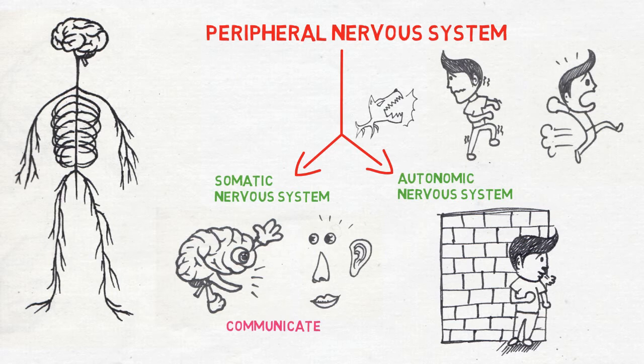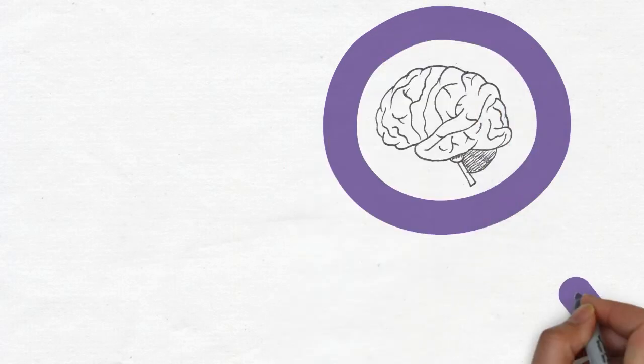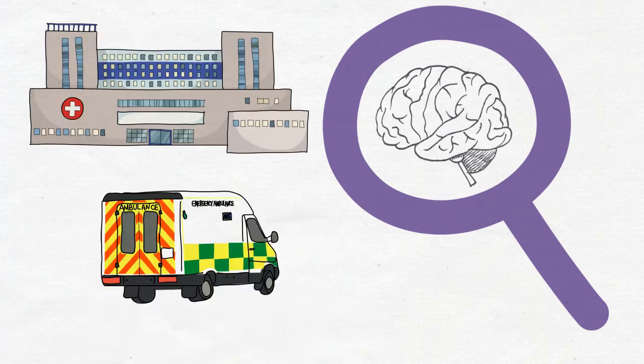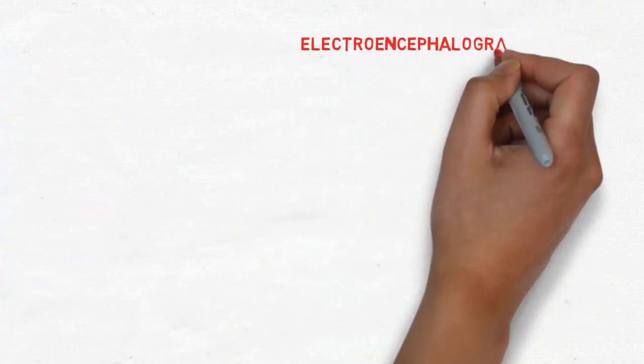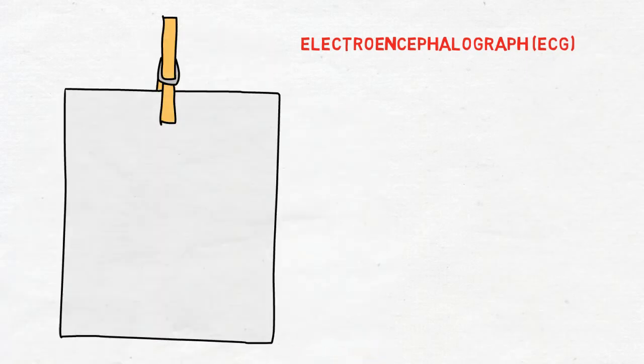To study the brain and the way it functions, many approaches have been adopted. One way is to study animals or people with brain damage to see what's happened to their abilities. Another way is to record electrical abilities of the neurons with an electroencephalograph or EEG.